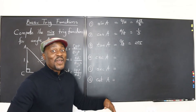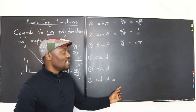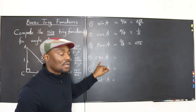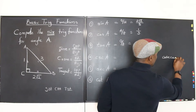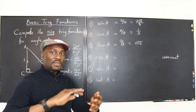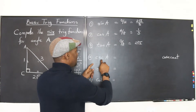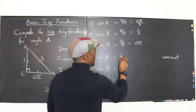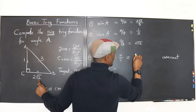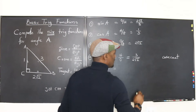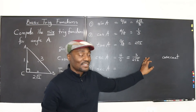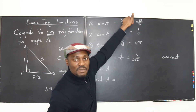Now for the other three functions — the easy part is that once you have sine, cosine, and tangent, you just flip them to get the reciprocals. The reciprocal of sine is cosecant. So cosecant of A is hypotenuse over opposite, which gives us 3 over 2√2. Some instructors want you to rationalize the denominator, but the key idea is it's just sine flipped.